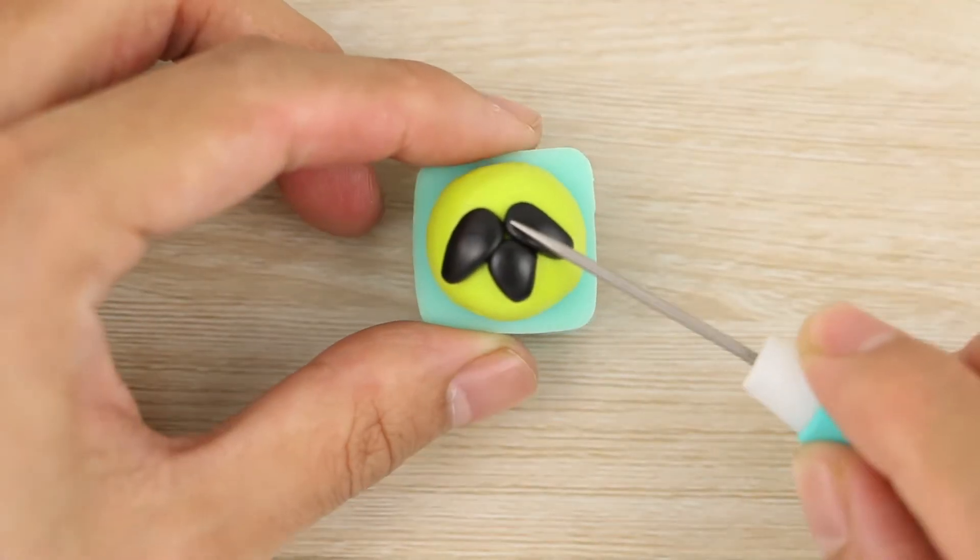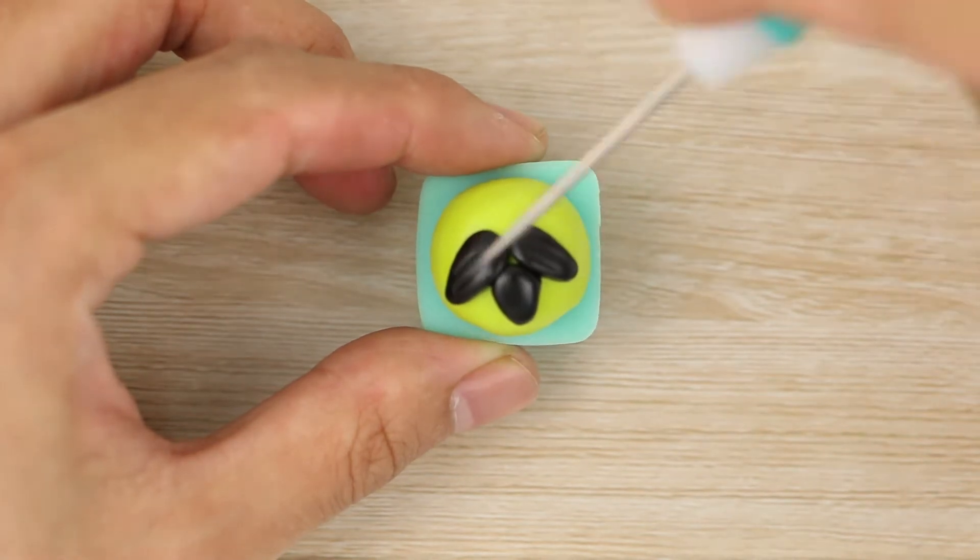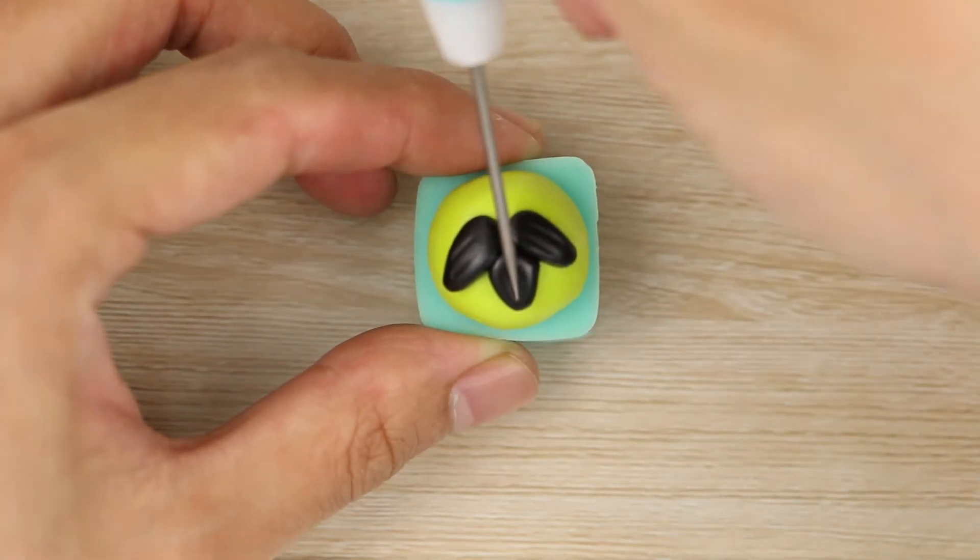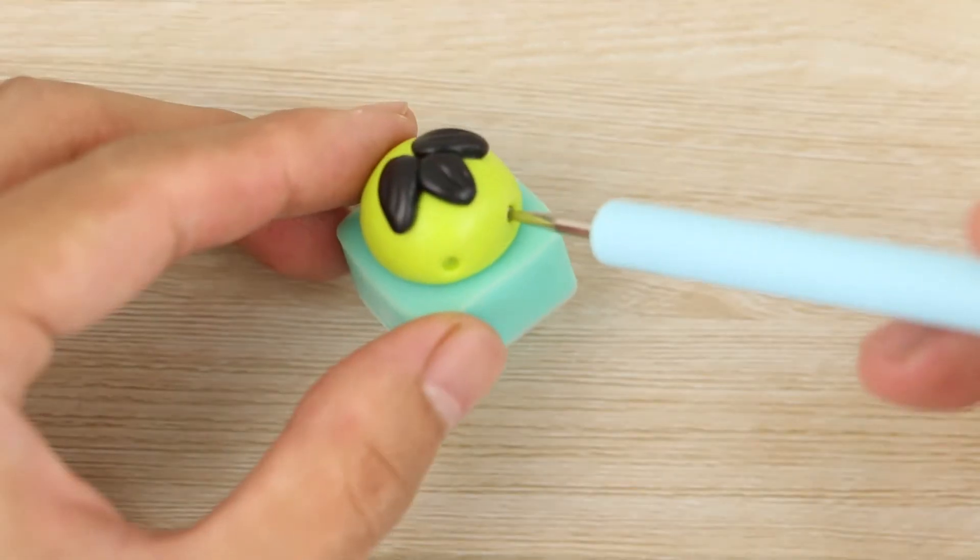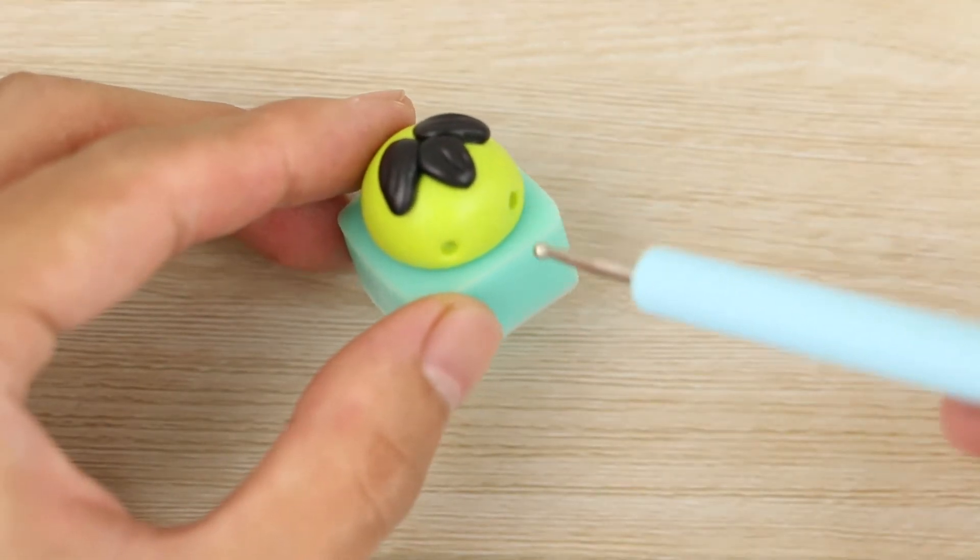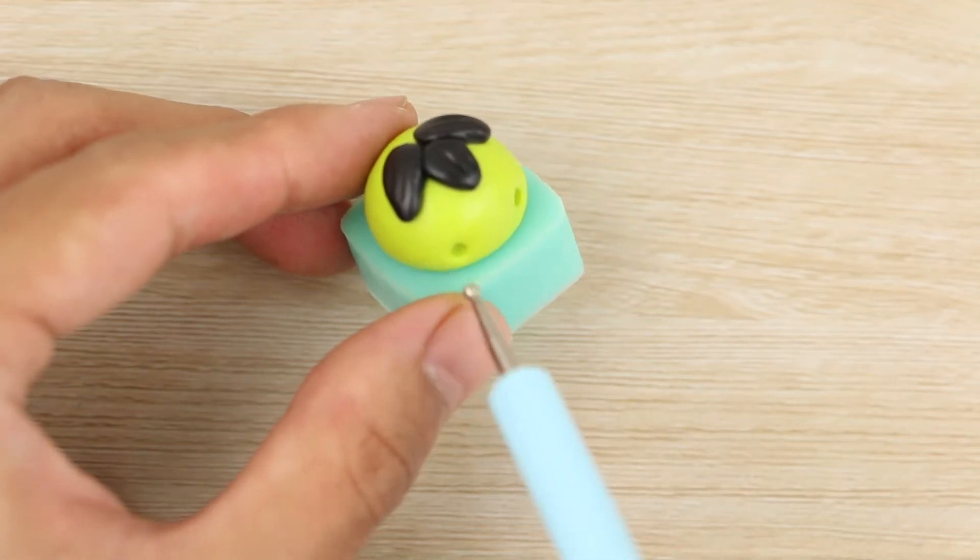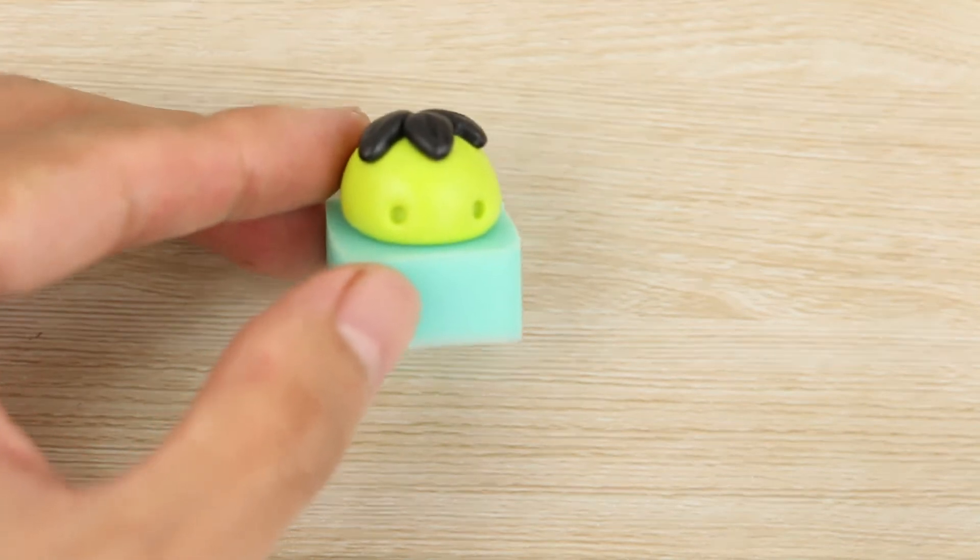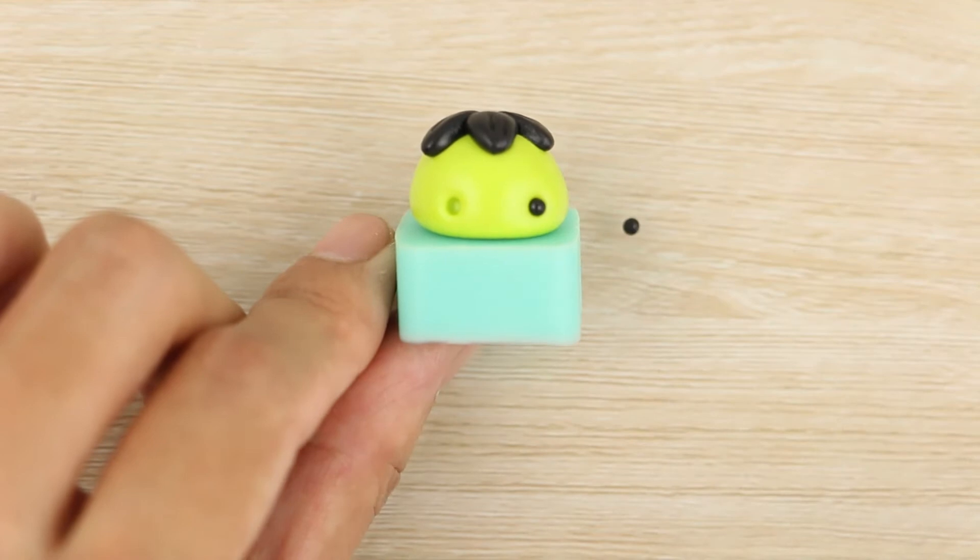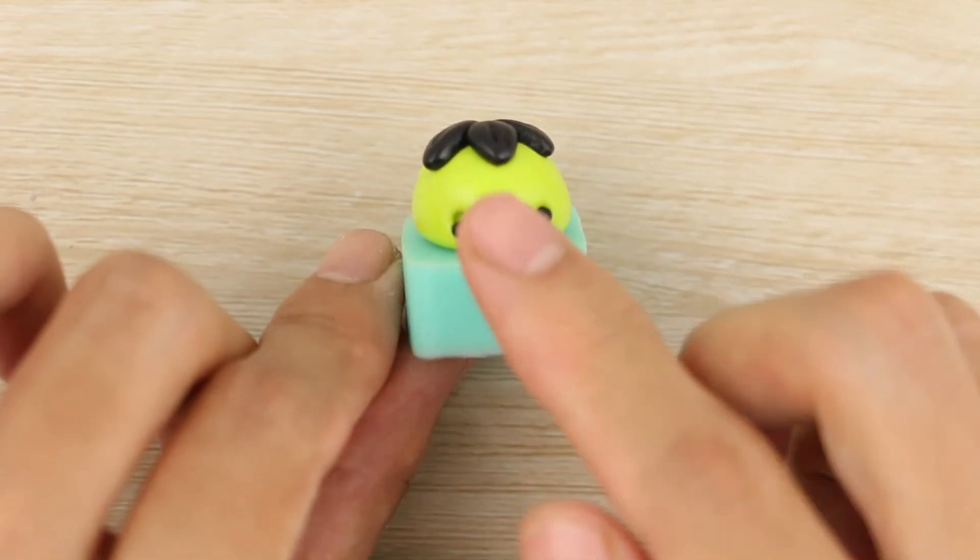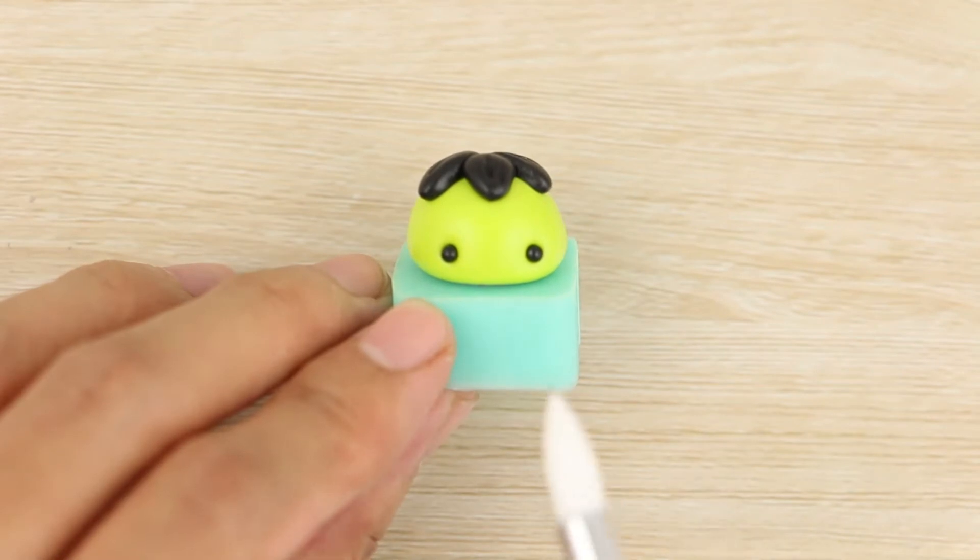Then I'm using a needle tool to press a few lines into each bit of the hair. For the face I'm using a dotting tool to poke some holes for the eyes and adding in some little balls of black clay, and then adding on a thin snake for the mouth.